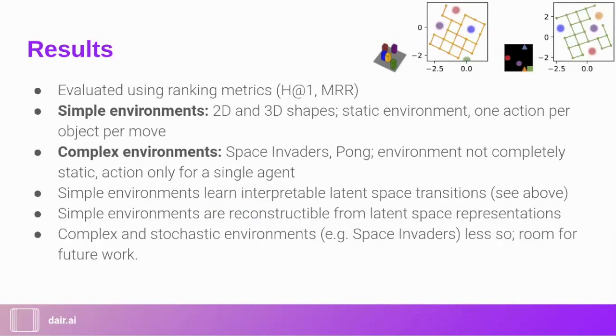And so to briefly just go over the results, they evaluate using ranking metrics. So hits at one and MRR, there is no downstream reinforcement learning task. But what they show is that for the simple environments, so for the 2D and 3D shapes that I introduced earlier, this works quite well. It's an easy assignment and the object factoring works really well. But then they also perform experiments with complex environments and stochastic environments such as Space Invaders and Pong. And in these cases, they do beat all the self-imposed baselines, but there is no actual interpretability to speak of. So I think the transitions are not as interpretable as they are in these simple examples. So basically the paper shows that their approach does work, but there is still a lot of room for improvement, for instance, in stochastic environments and some more complex environments.